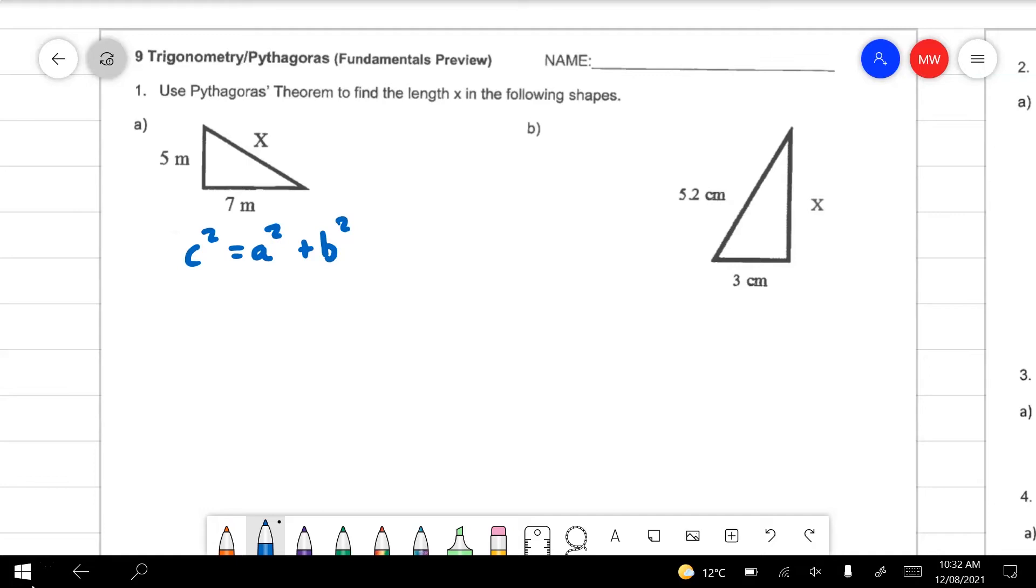We're going to, just for practice, label up this so we know that C is always the longest side and A and B can be on whichever side they like. And then what we do is we just substitute our values into our equation so C is going to become X squared equals 5 squared plus 7 squared that means that X squared is going to be 25 plus 49.